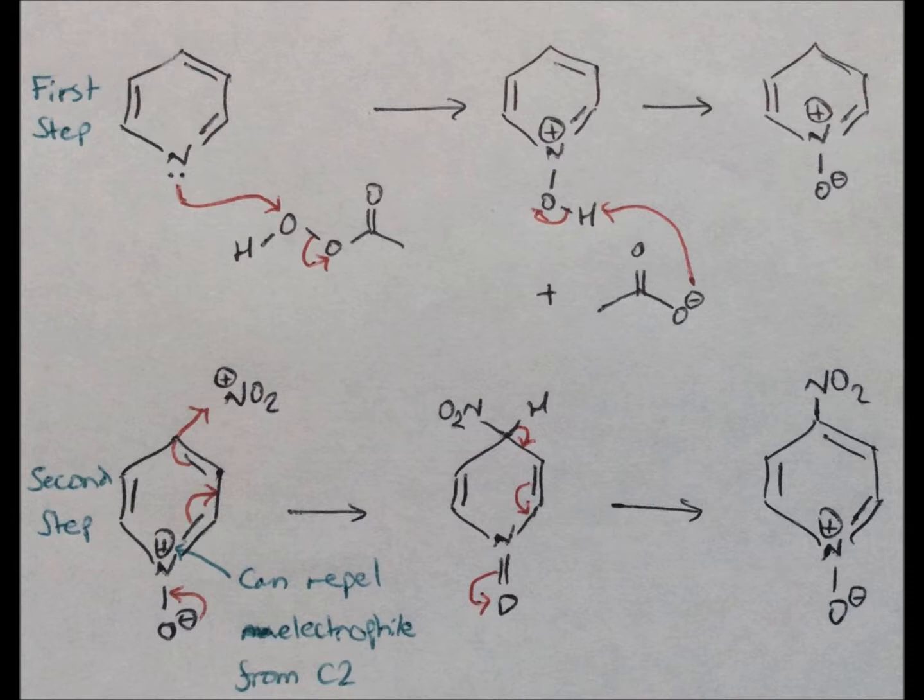When NO2 is added, it is added in position 4, also known as para. Attack at position 2, or in the ortho position, is also possible, but the positively charged nitrogen ion can repel the incoming electrophile.